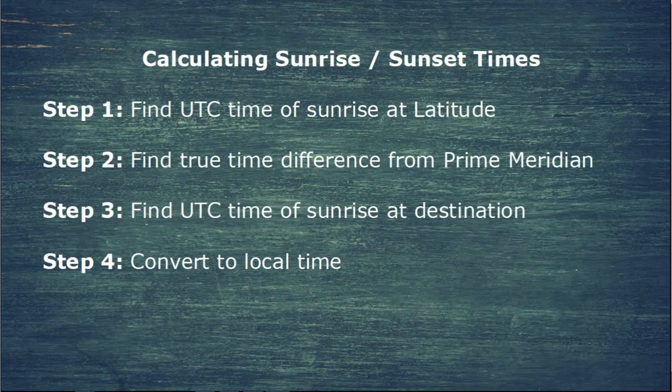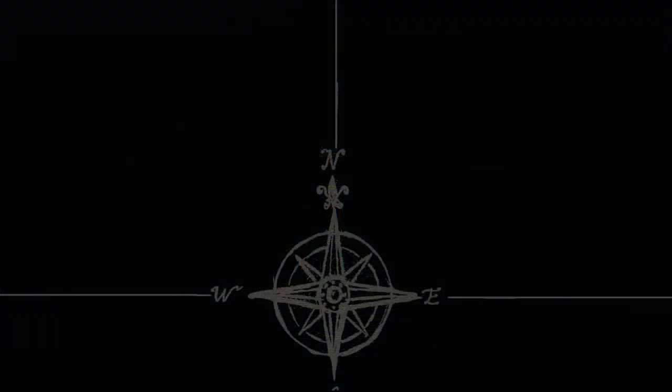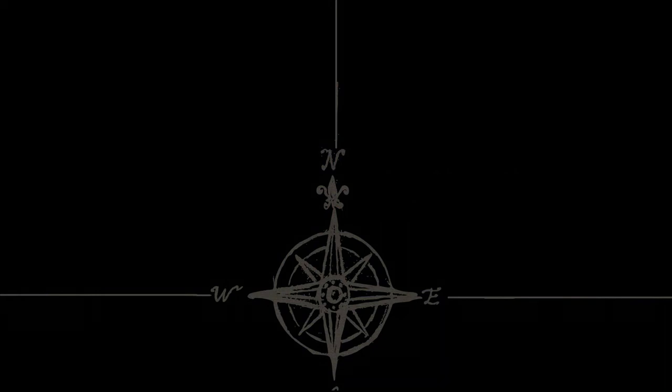That brings us to the end of this video. Just follow all four steps, take a note of them, and you'll be able to use the almanac to calculate sunrise and sunset wherever you are in the world. If you found the information interesting and useful, a thumbs up is always appreciated. Leave any questions in the comments below, and make sure you hit the subscribe button to keep up to date. Until next time, thank you for watching and goodbye.